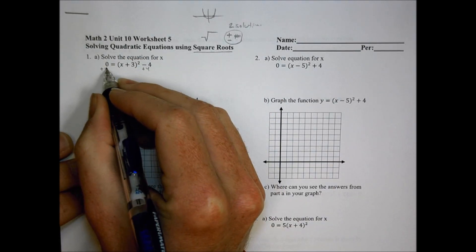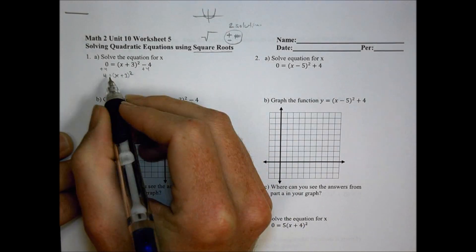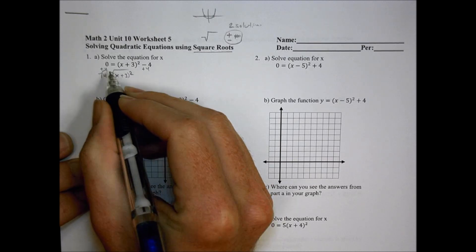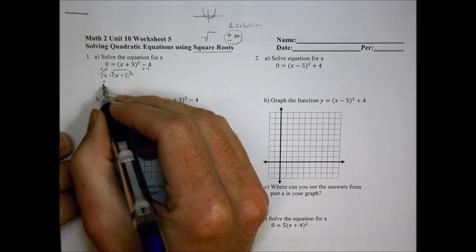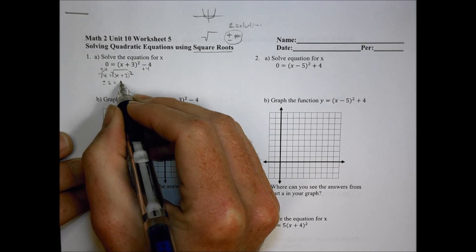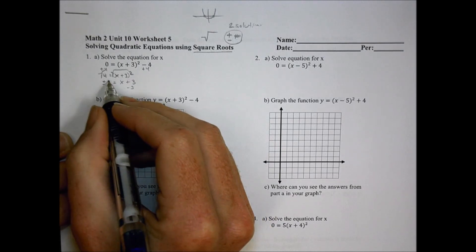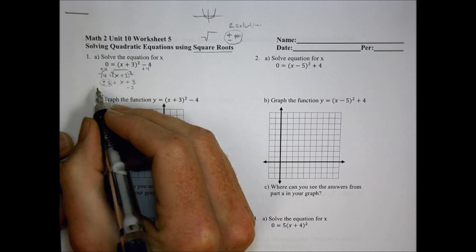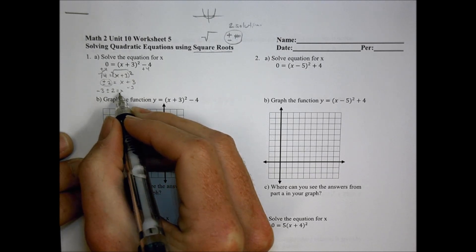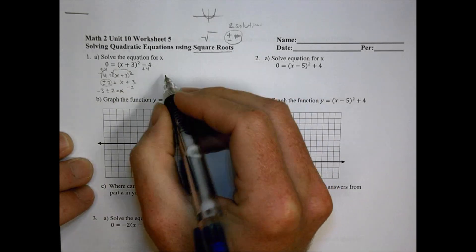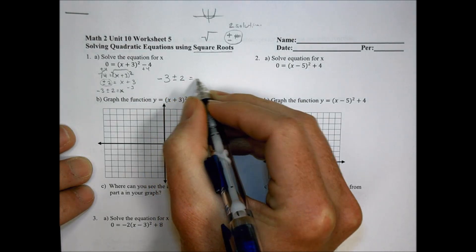To solve it, I'm going to add 4 to both sides, so I have 4 equals x plus 3, and that's squared. To get rid of this squared, I take the square root of both sides — that eliminates the square root. The square root of 4 is going to be plus or minus 2, and that equals x plus 3. I want to move the 3 to the other side, so I subtract 3. I have to keep that group together, so I write negative 3 plus or minus 2 equals x.